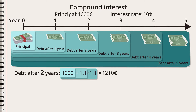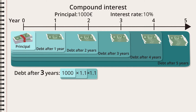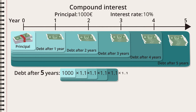See what happened? The debt has increased by 21 percent. Pause the film and check the numbers if you think this was weird. Remember that the bank charges interest on the entire original principal plus the first year's interest. After three years, the bank calculates interest from the original principal and two years of interest, so let's multiply all of it by 1.1.